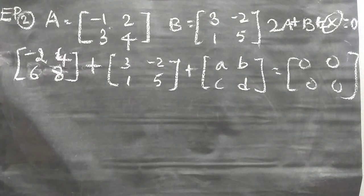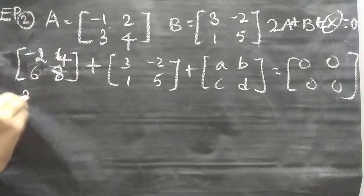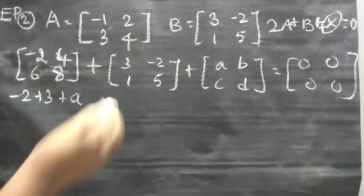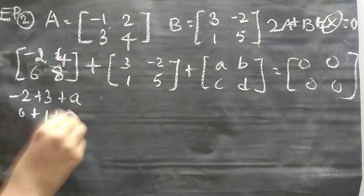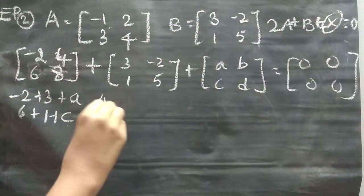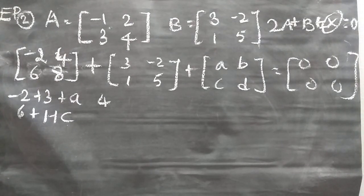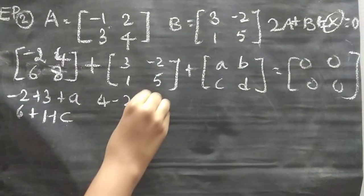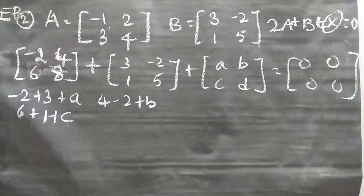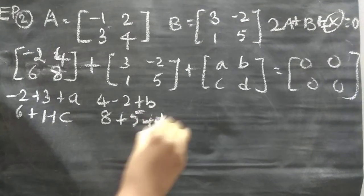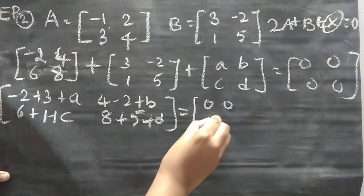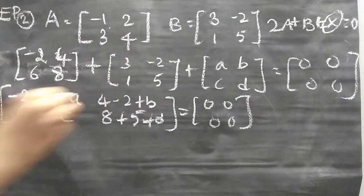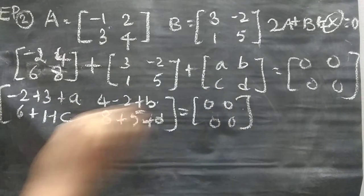Adding everything, we get: (−2 + 3 + A), (4 − 2 + B), (6 + 1 + C), (8 + 5 + D), all equal to the zero matrix. So A, B, C, D are all to be solved by setting each element equal to zero.